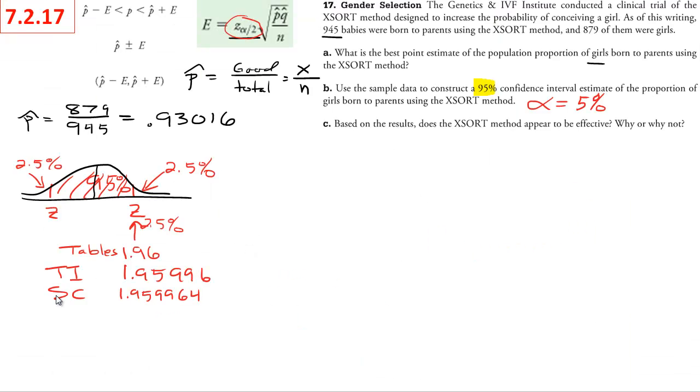So I put in the StatCrunch number, which is really the same thing. The calculator had even more digits. I just didn't round as many. It is not like one is better than the other. Both of these are perfectly fine. The table is fine too. These are just a little bit more accurate. So we now have our z critical, the first piece of the puzzle for our equation.